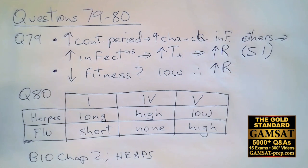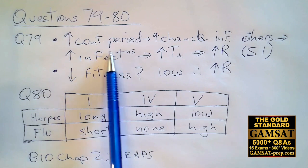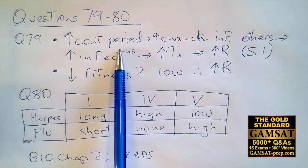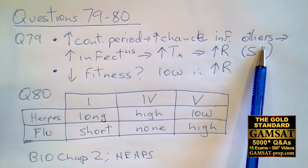So 79 starts with all other factors held constant, and then we're looking for situations in which contagiousness will likely lead to resistance. So let's assess Roman numeral one as the possibility to lead to increased resistance. Well, let's look at the logic. If you have an increased contagious period for infected individuals, so there's an increased contagious period, well, then there's an increased chance that you will infect others.